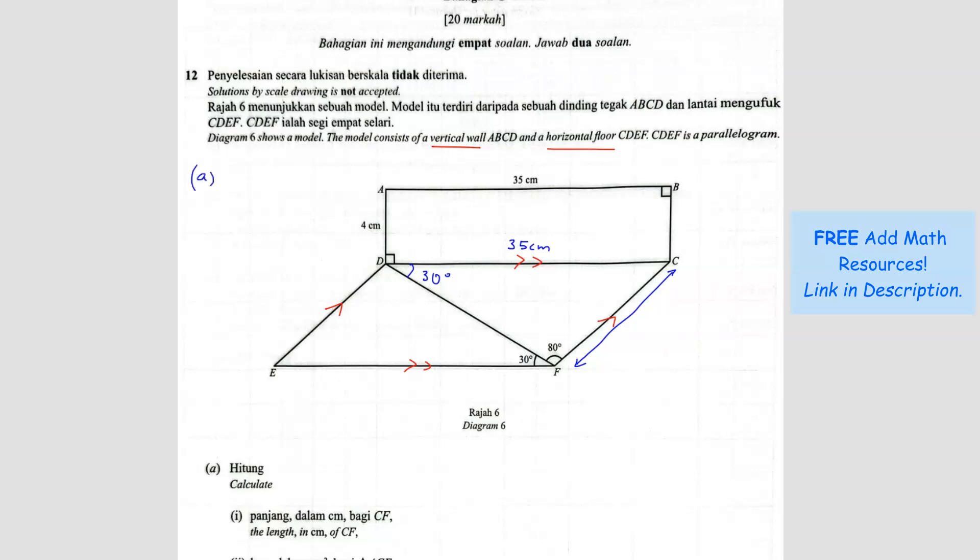So question A, sine rule. We are going to form a pair between these two and also the CF and the 30 degrees. So CF over sine 30 equals 35 over sine 80. For those who don't know the formula, sine A over A equals sine B over B. You can also flip it. So I basically flipped it. To find CF, I bring the sine 30 to the other side. So I get 35 times sine 30 divided by sine 80. So you should get your answer 17.77 cm. So this is the first part.